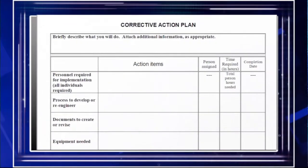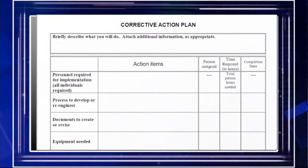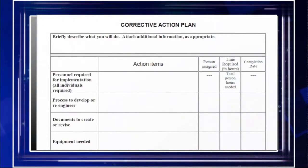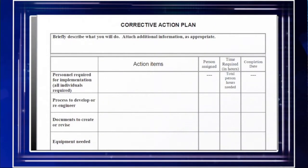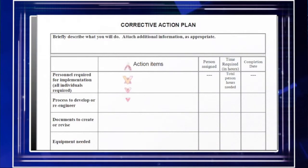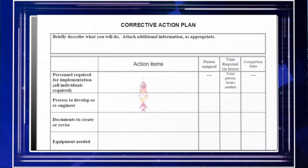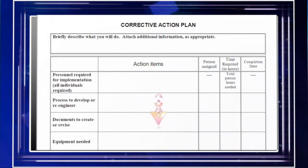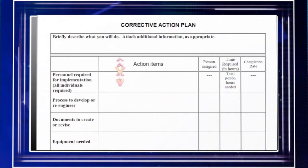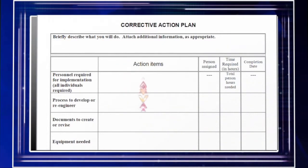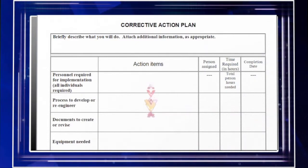This is an example of a form that you can use. The benefit of using this kind of form is that it ensures that you don't forget any particular activity. Into these spaces here, you're going to put in the processes that you're going to be revising, the documents that need to be changed, the tasks that need to be completed — as appropriate to each category on the left-hand side.